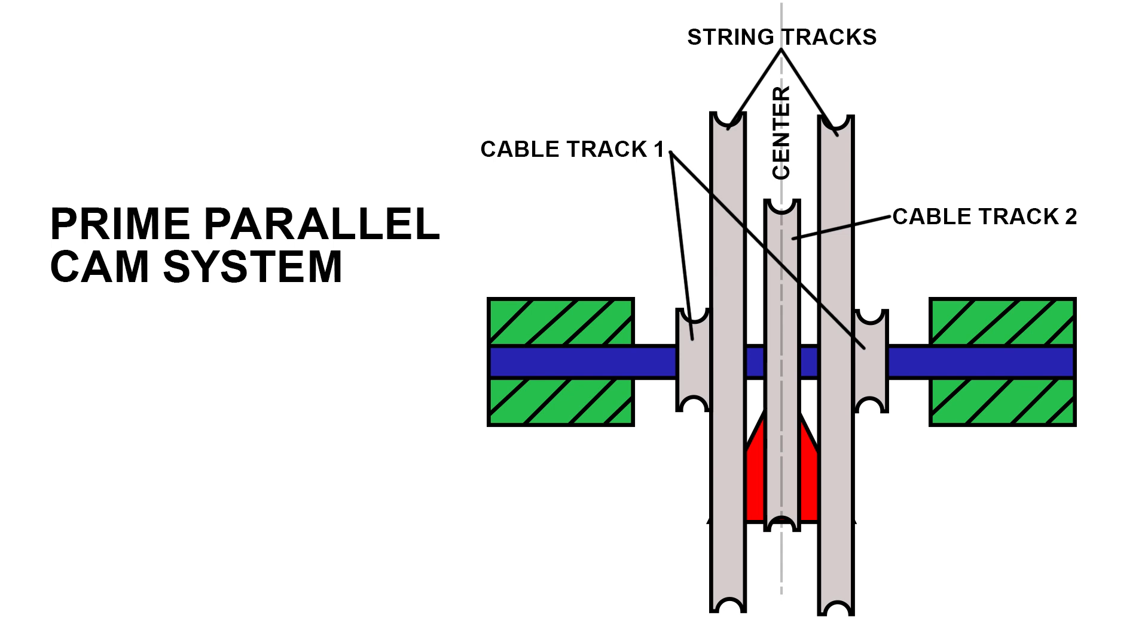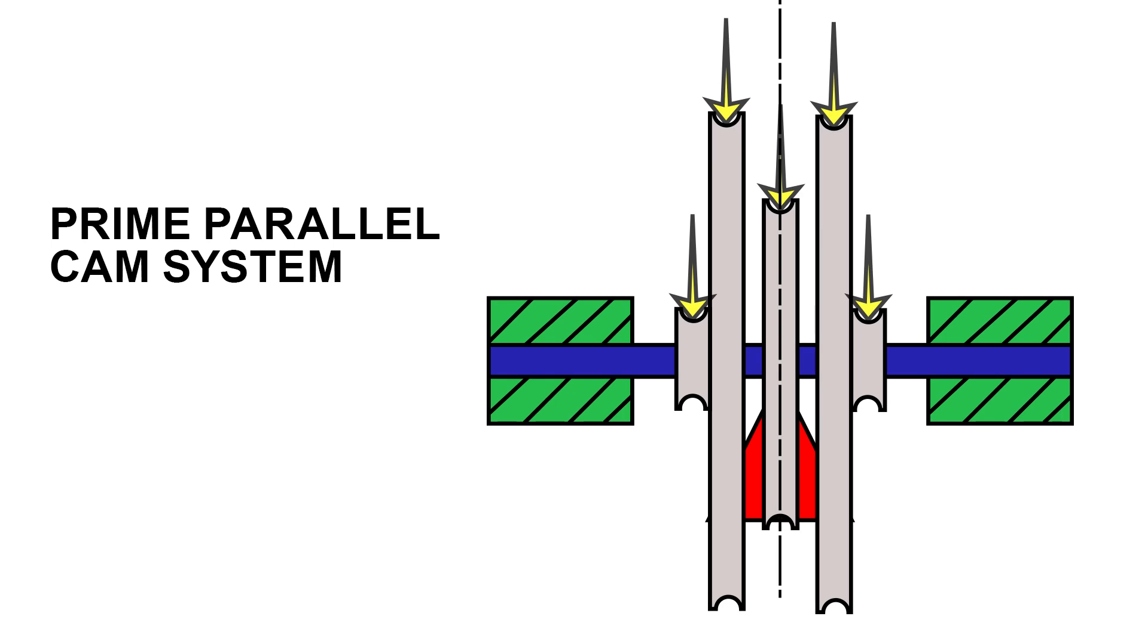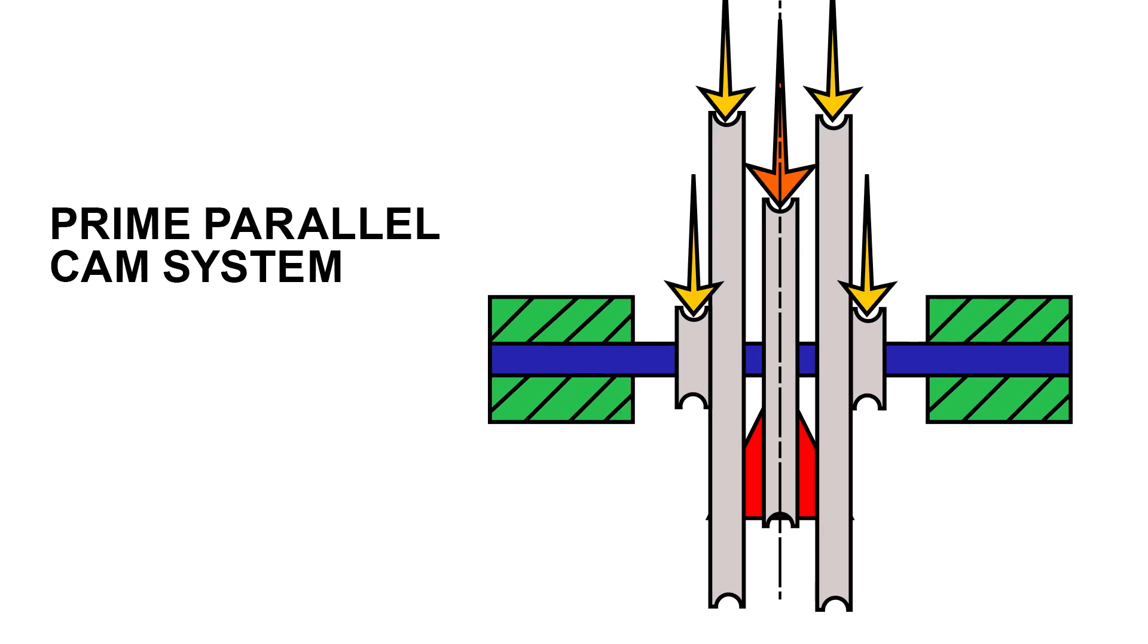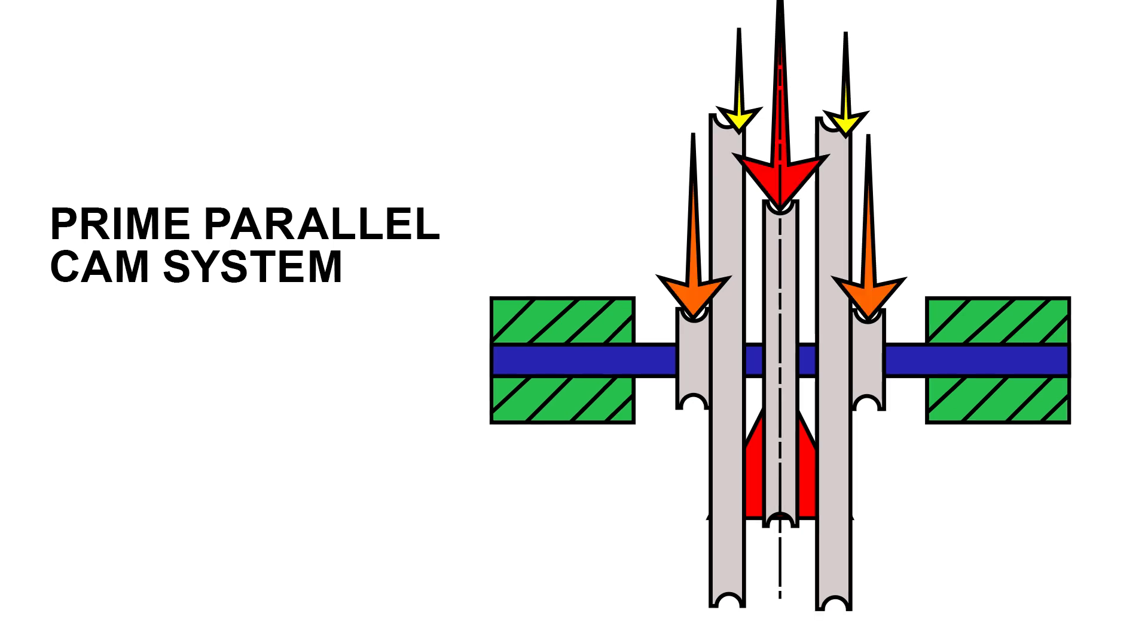What that allowed at full draw, even though the string track loads went to close to zero, and the cable track almost doubled the force on the cables, because the cables were already being applied through the direct center of the cam, the cam balanced.